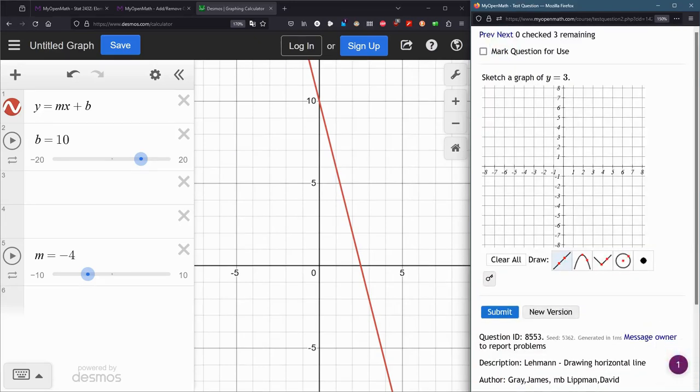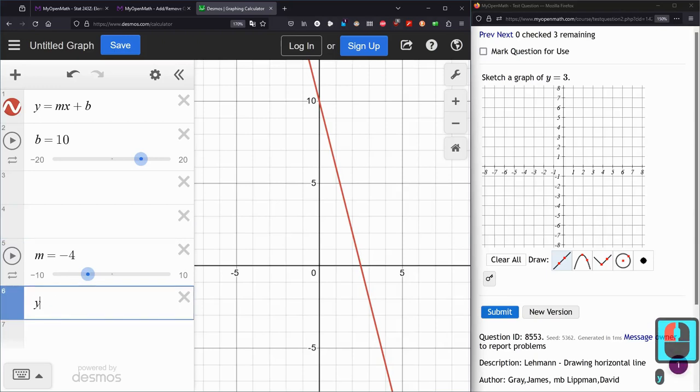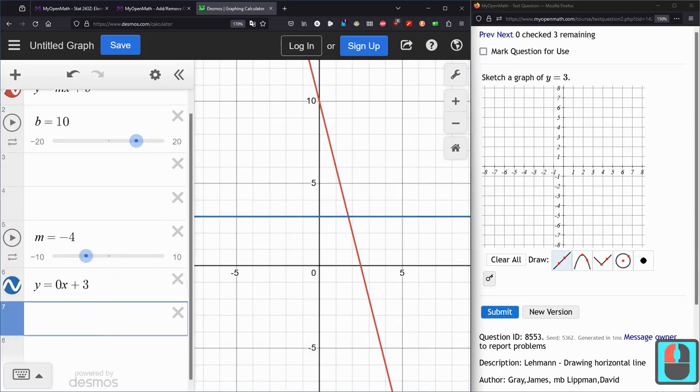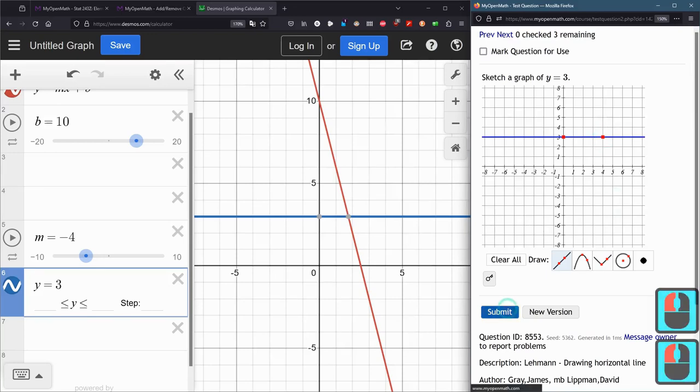Now, we're sketching a graph y equals 3. Now, notice there's no x here. So what does that mean? If there was no x, here's another way to think about it. y equals 0x plus 3. And 0 is the slope. If there's 0x's, you can be lazy and not even write that. So, what we're looking at is just y equals 3. This is a horizontal line where every y value, including the y-intercept, is 3. So you can click there and then anywhere else when the y value is 3.